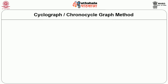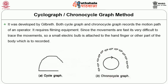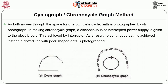Cyclograph and chronocyclograph method: Developed by Gilbert, both the cyclograph and chronocyclograph record the motion path of an operator and require filming equipment. Since movements are fast, it is very difficult to trace them, so a small electric bulb is attached to the hand, finger or other part of the body to be recorded. As the bulb moves through space for one complete cycle, the path is photographed by still photograph. In making a chronocyclograph, a discontinuous or interrupted power supply is given to the electric bulb using an interrupter, resulting in a dotted line with tear-shaped dots being photographed rather than a continuous path.